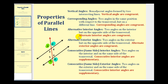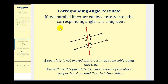Now, we're going to prove many of these in the next several videos, but in order to prove these, we have to first state the corresponding angle postulate. A postulate is not proved, but it is assumed to be true because it is self-evident. So, we're going to use this postulate in the next several videos to prove many of the relationships that we previously stated.